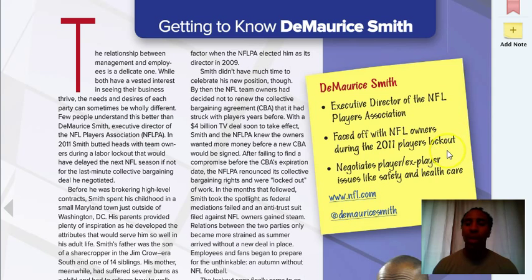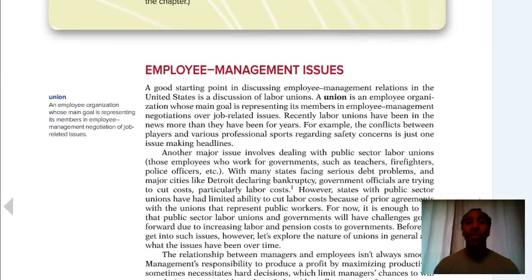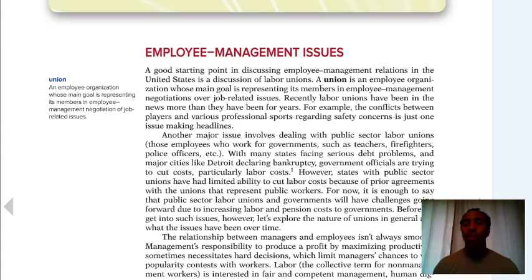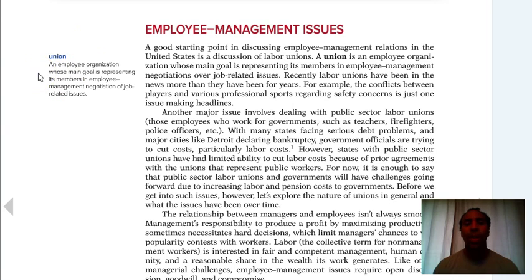He faced off with NFL owners during the 2011 players lockout and negotiates player and ex-player issues like safety and healthcare. I posted a video of him speaking in regards to a variety of topics in the Chapter 12 module. A union is an employee organization whose main goal is representing its members in employee management and negotiation of job-related issues.